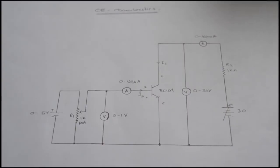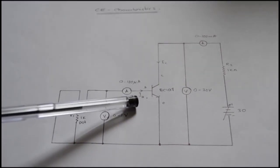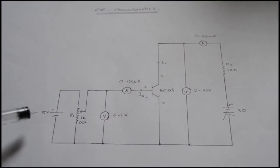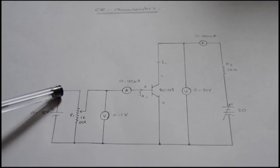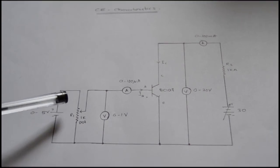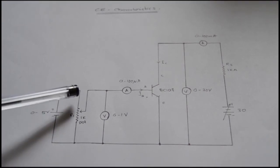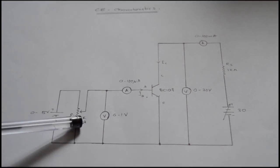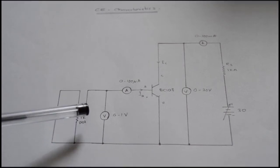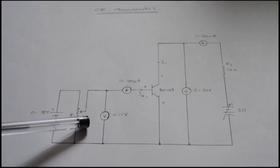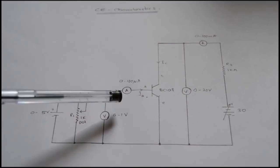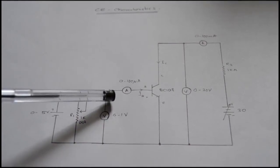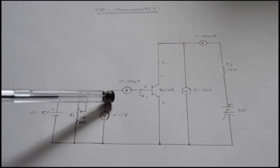This is the connection diagram for common emitter configuration. This is our transistor BC107. We apply a voltage here and the corresponding voltage drop appears across this potentiometer. By varying the potentiometer, we can have different values for base-emitter voltage VBE, which is measured using this voltmeter. This ammeter is used for measuring base current IB, which is in the micro-ampere range.